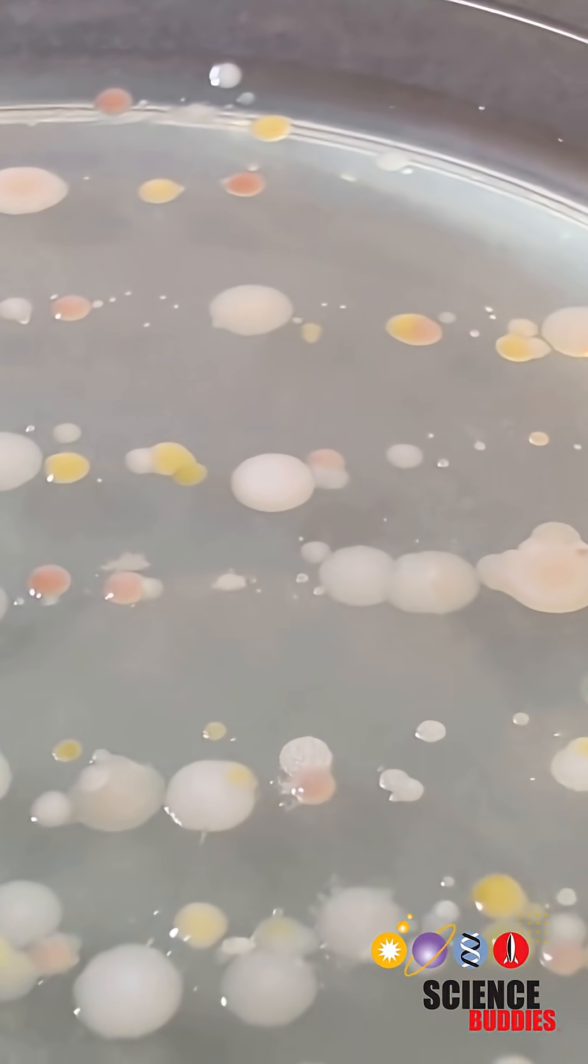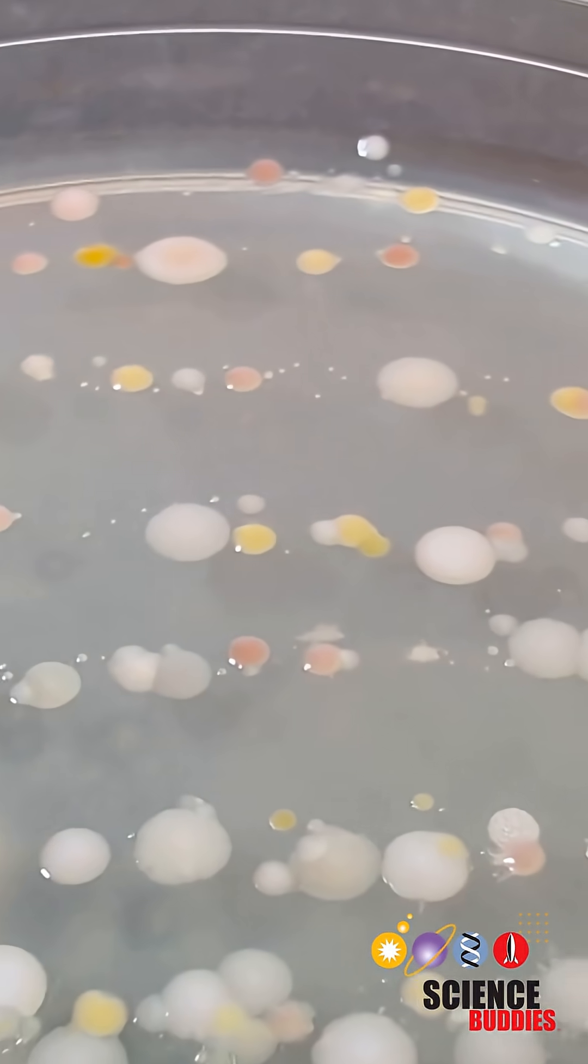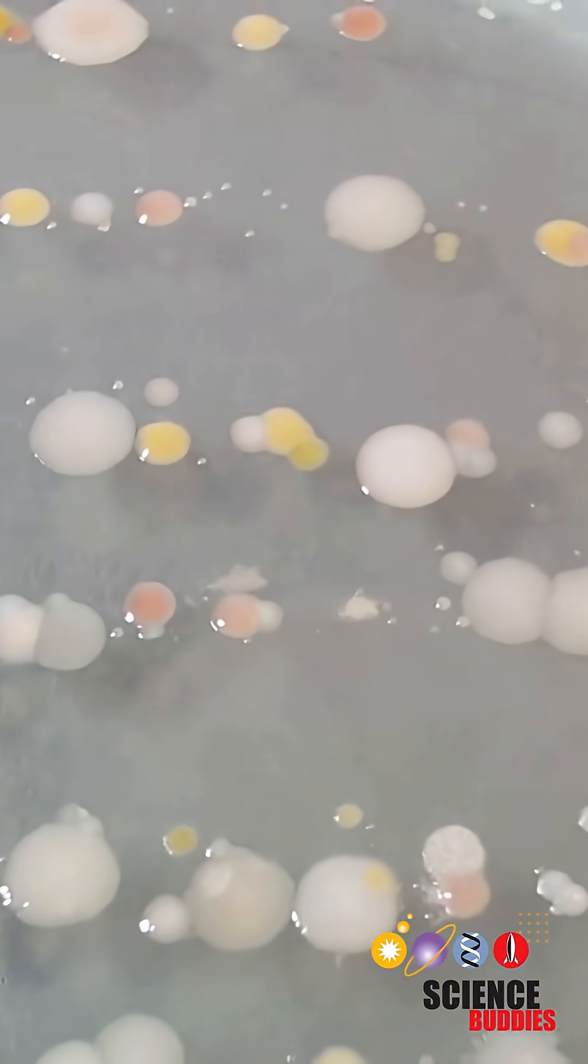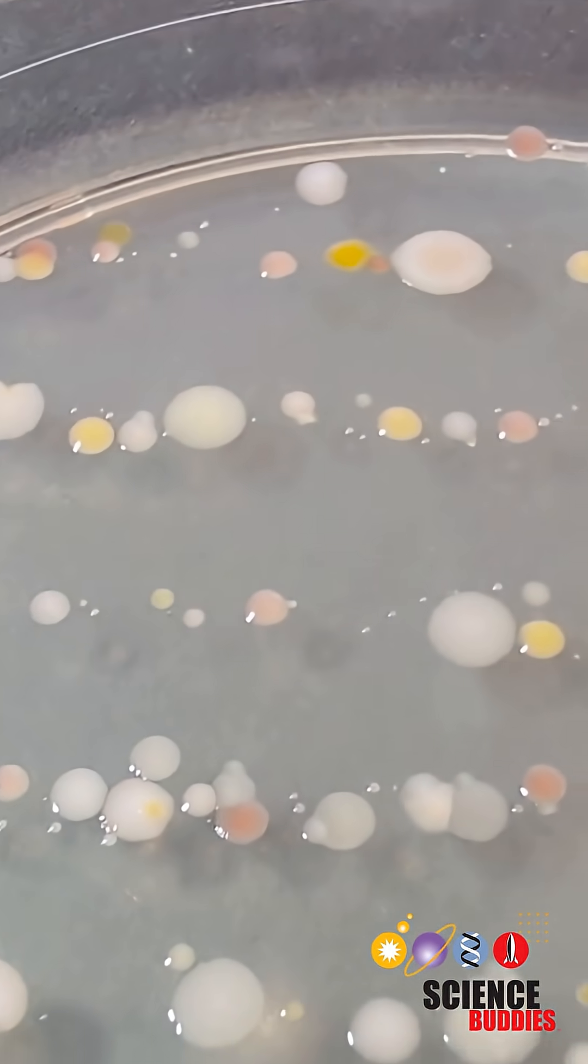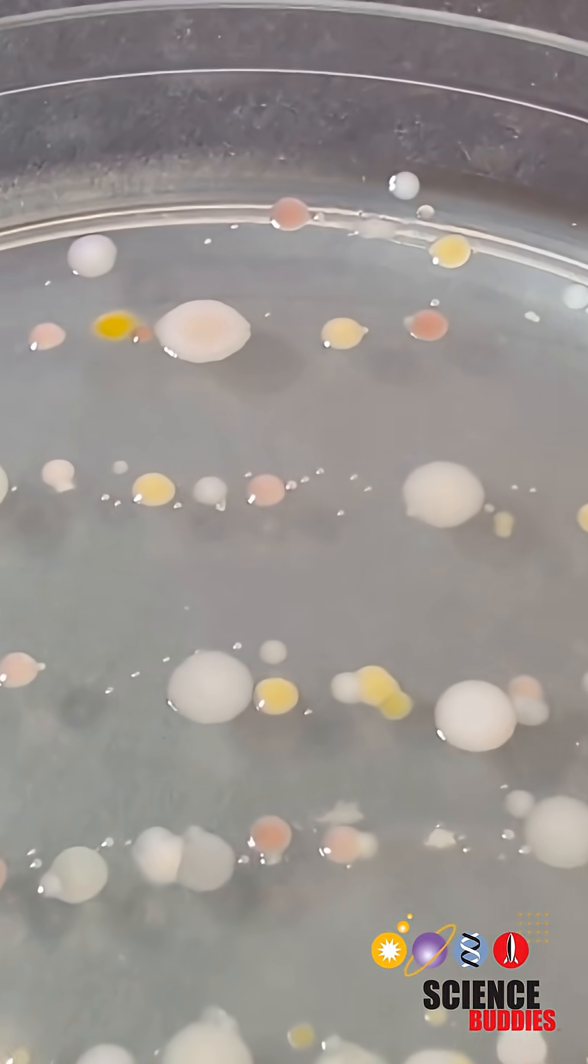So you should end up with colonies of microbes that look kind of like this. If you get colonies like this then it means that you successfully could grow the microbes after they were treated.